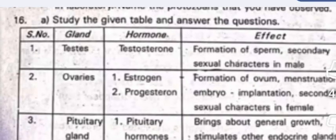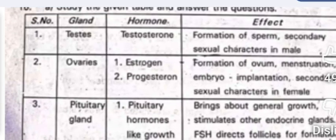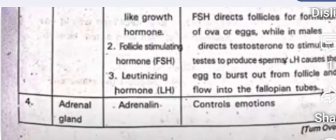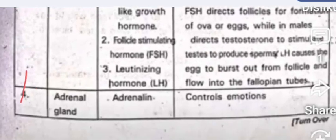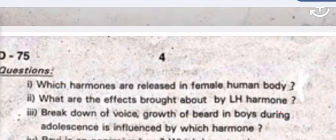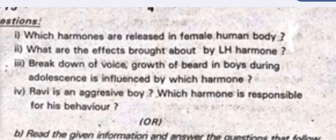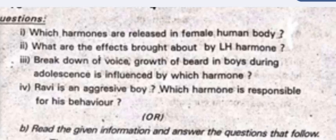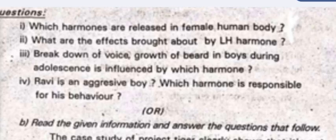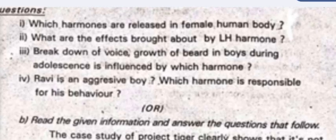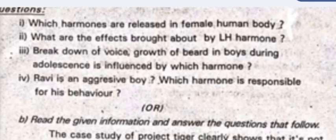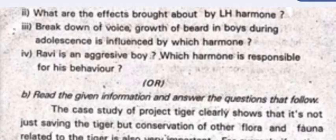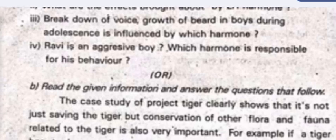Question 16a: study the following table — gland, hormone, and effect — with four entries, and answer the four sub-questions (one mark each): which hormones are released in the female human body; what are the effects brought about by the LH hormone; breakdown of what causes growth of beard in boys during adolescence; and which hormone is responsible for Ravi being an aggressive boy?